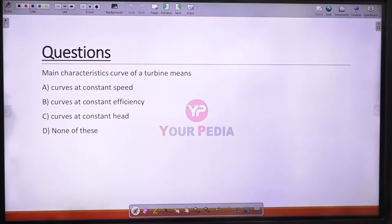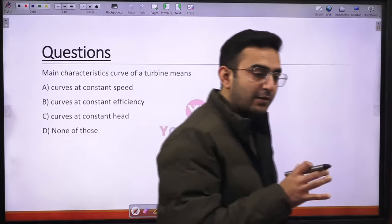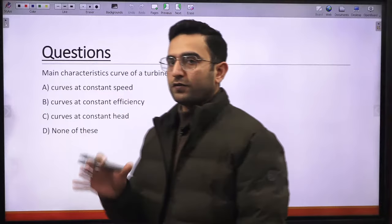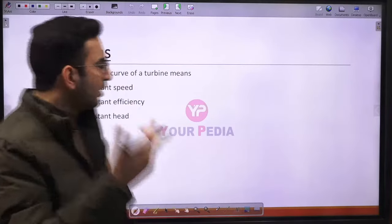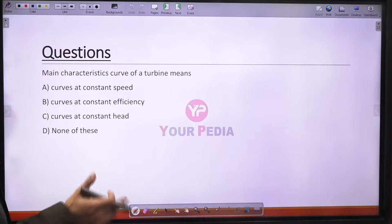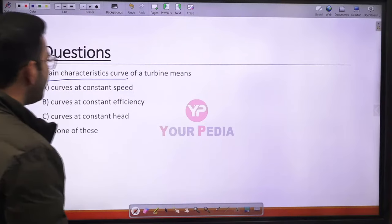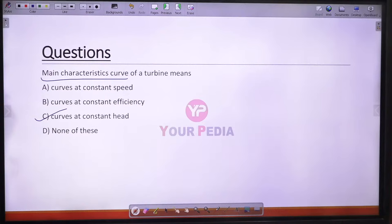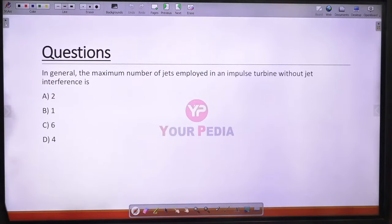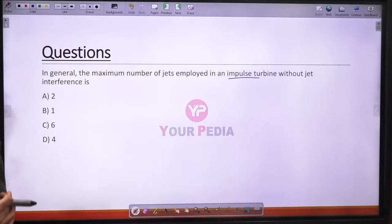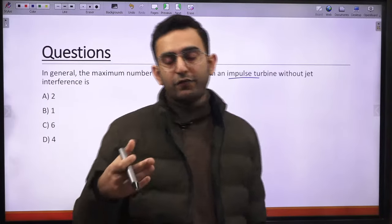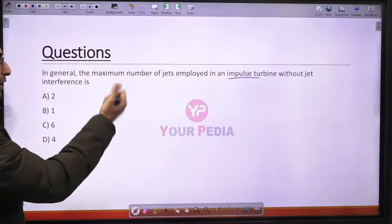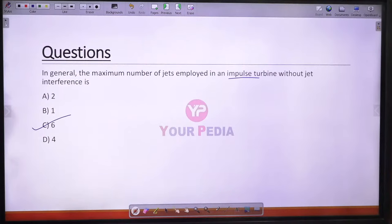Question 13: Main characteristic curves of a turbine are drawn at a particular constant speed. Option C is correct. Question 14: The maximum number of jets employed in an impulse turbine without jet interference is equal to 6. Option C is correct.